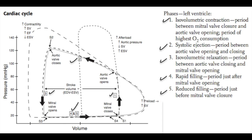Phase two, seen at the top of the pressure-volume loop, is the systolic ejection phase — the period between aortic valve opening and aortic valve closing. Ejection occurs after the pressure in the left ventricle exceeds the pressure in the aorta. Phase three, at the left side of the diagram, is isovolumetric relaxation, occurring between aortic valve closing and mitral valve opening — also a relatively short phase. Phase four is rapid filling, the period just after mitral valve opening at the bottom left of the diagram. During rapid filling, pressure in the left atrium is much higher than in the left ventricle, so blood moves from the left atrium into the left ventricle and volume begins to increase.